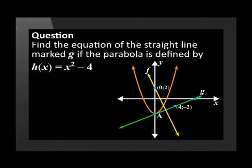Let's try a question together. Find the equation of the straight line marked g in this diagram, if the parabola is defined by h of x equals x squared minus 4. Functional notation has been used in this question, which makes it easier to identify graphs when there is more than one on the Cartesian plane. We need to find the equation of the graph marked g. So where exactly do we start?